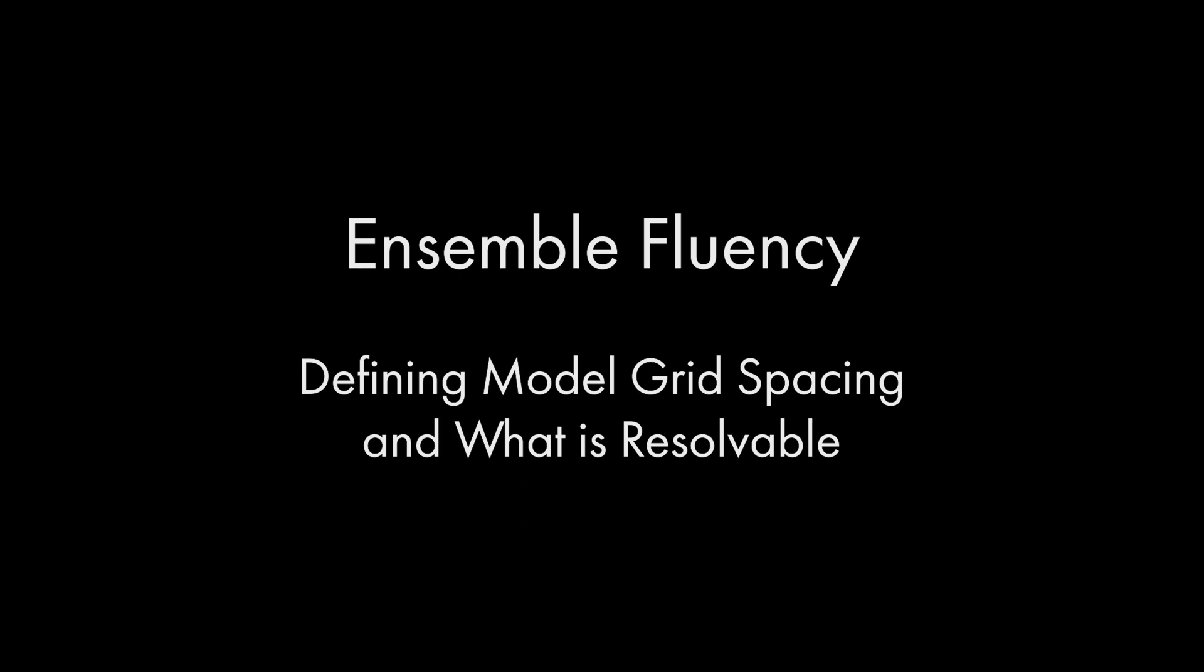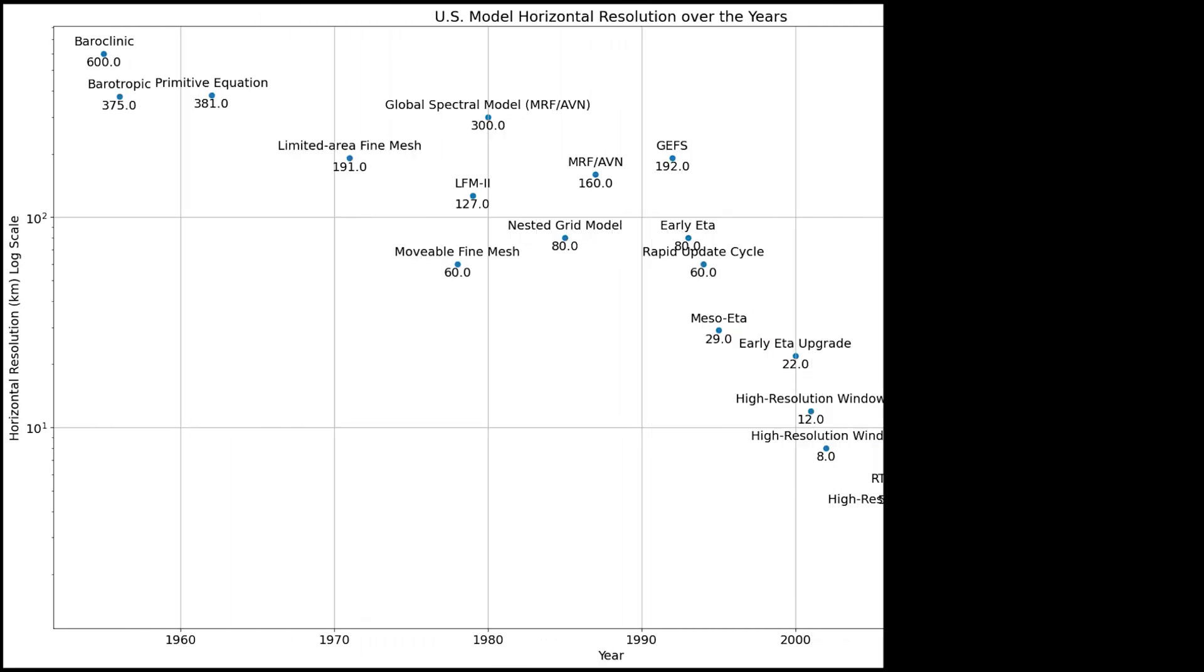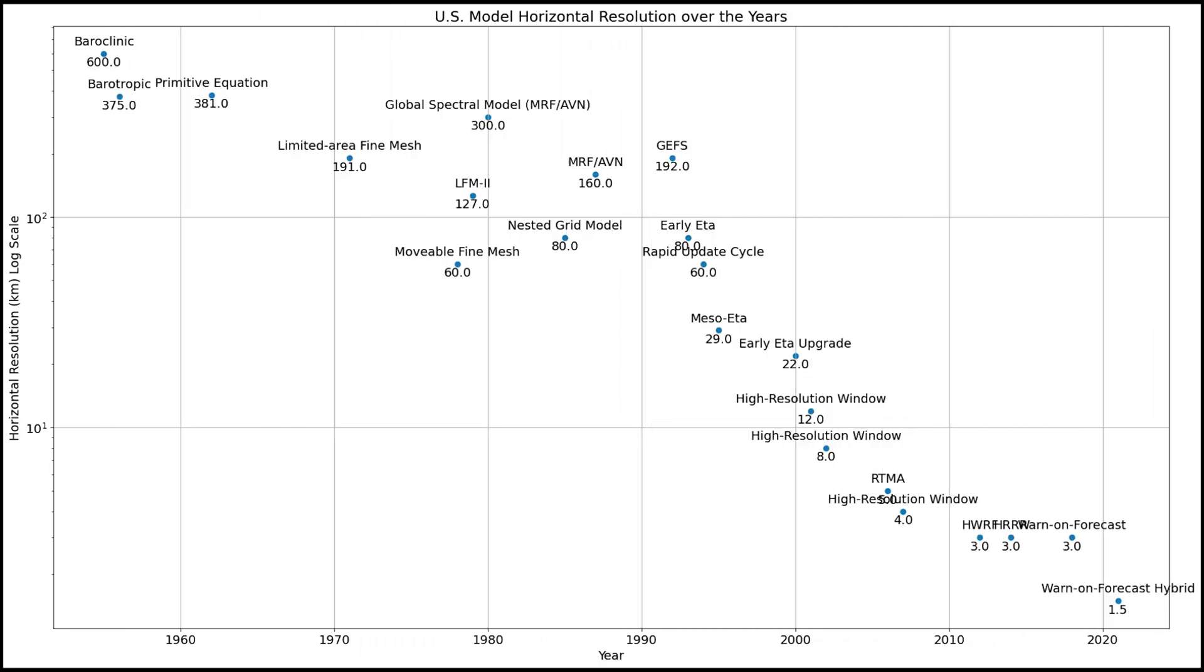It is critical to understand model grid spacing and what meteorological features are resolvable. As we continue to gradually increase the resolution of models, there is a change in what models can resolve. Knowing this is important because we are starting to see different grid resolution model output from all the various weather models, not just in the ensemble systems, but also in how the data are displayed in visualizations like DESI and on private weather sites.